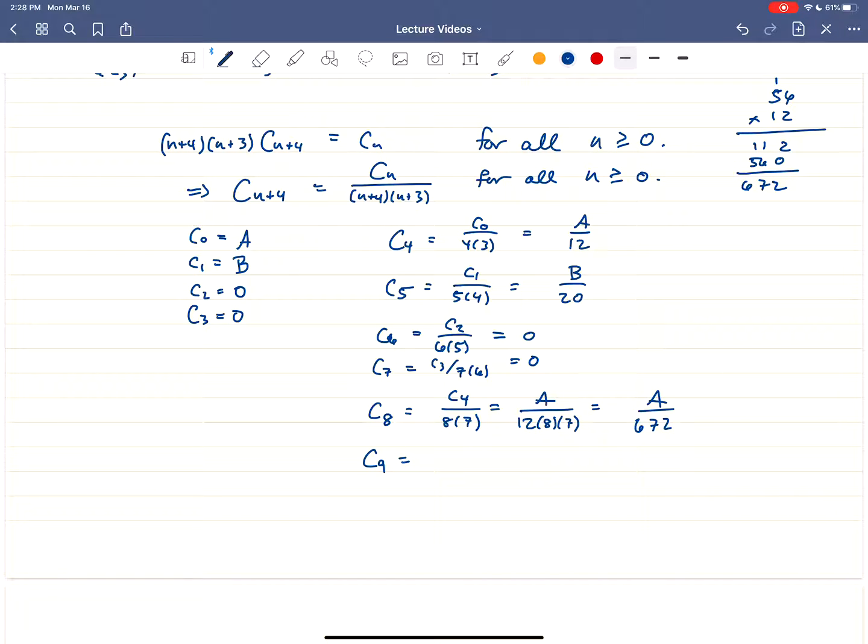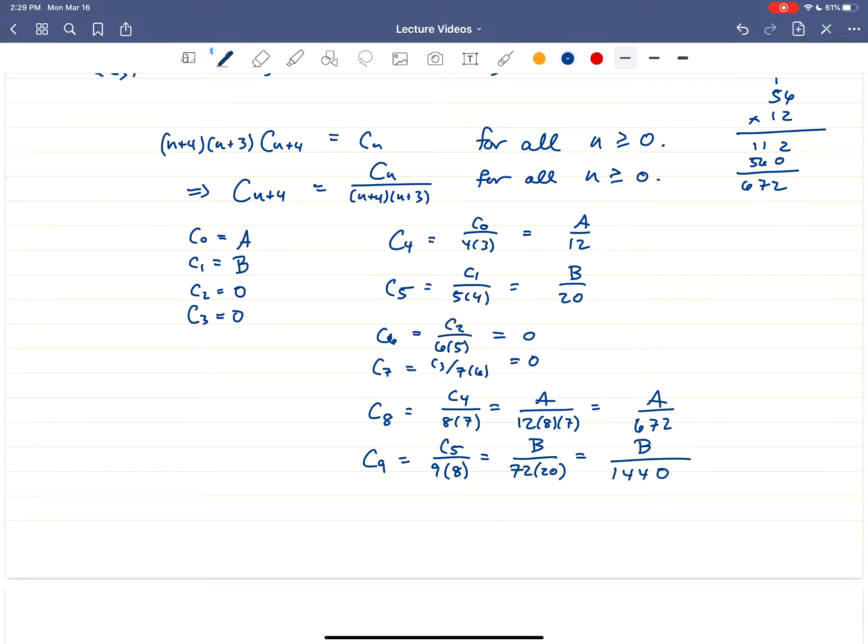And then let's do one more. c₉. That's going to be c₅ over 9 times 8. So that's going to be B over 72 times 20. And that one's straightforward. Let's see. 2 times 72 is going to be 144. So it should be 1440. Again, assuming I don't make any silly arithmetic mistakes, which is always possible.